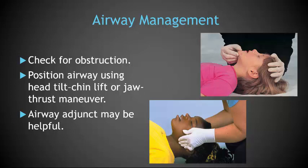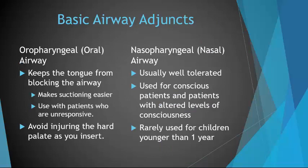For the child younger than 2 years, place a thin layer of padding under the shoulders or upper torso to align the airway. Your airway adjuncts may be oral pharyngeal airway or nasopharyngeal airway. Your OPA keeps the tongue from blocking the airway, which will make suctioning easier, and you would use this with patients who are unresponsive but do not have a gag reflex. You want to avoid injuring the hard palate as you insert and do your best to not cause any type of trauma to the airway.